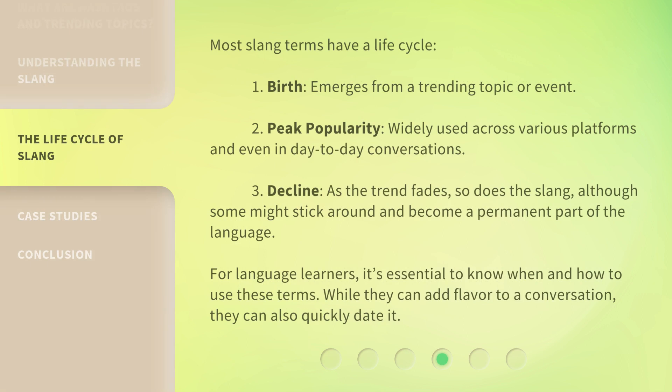Most slang terms have a life cycle. First, birth — the term emerges from a trending topic or event. Second, peak popularity — it's widely used across various platforms and even in day-to-day conversations. Third, decline — as the trend fades, so does the slang, although some might stick around and become a permanent part of the language. For language learners, it's essential to know when and how to use these terms. While they can add flavor to a conversation, they can also quickly date it.